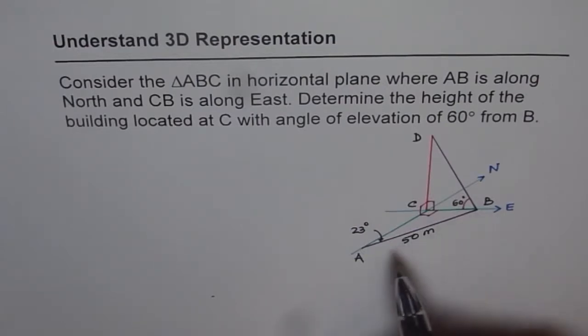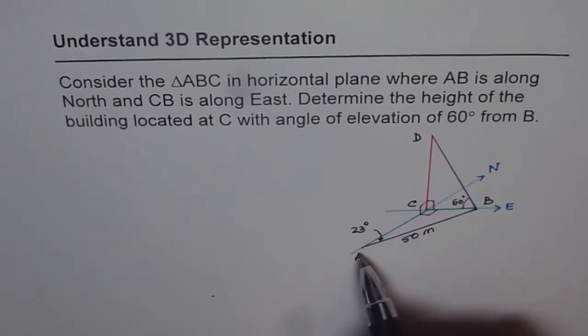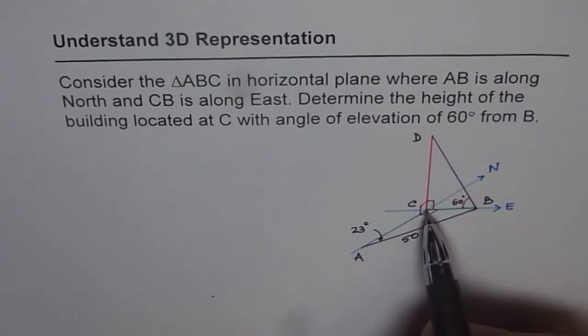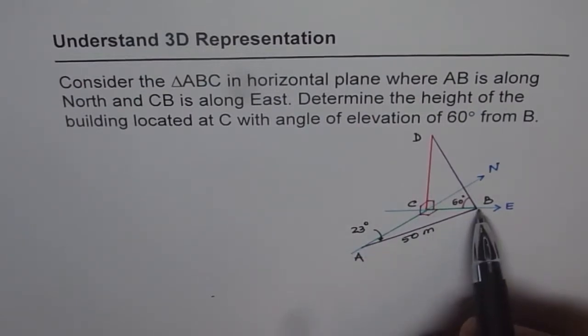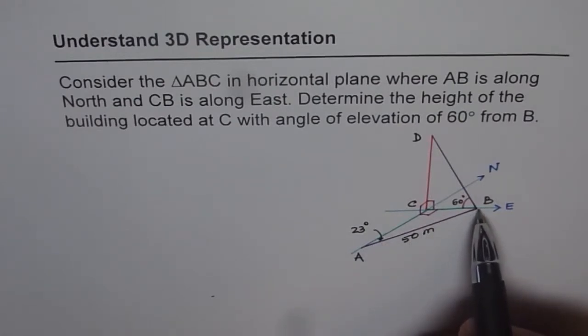Think like this. There are two points on the ground from which measurements are being done, and these two points are 50 meters away. Angle which A makes with foot of the building and the other point is 23 degrees, and angle of elevation from B is 60 degrees.